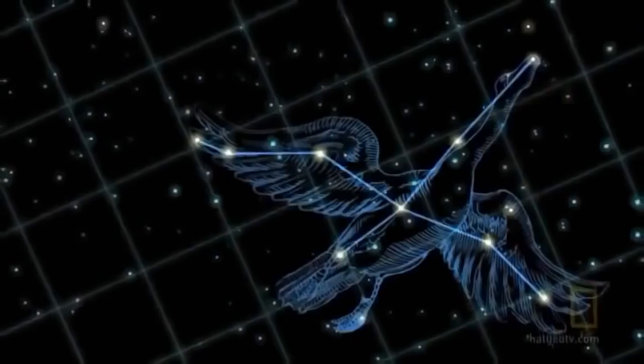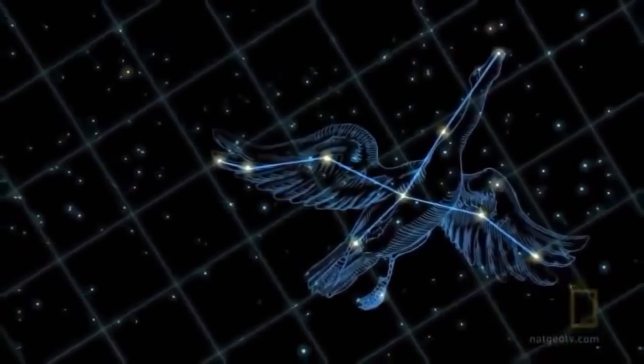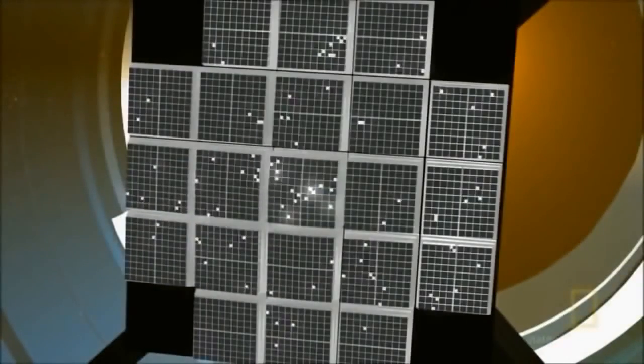Kepler is looking at the constellation Cygnus in the night sky at 100,000 stars, taking picture after picture after picture, minute after minute. And the goal of Kepler is simple: to look for stars among the 100,000 that dim.